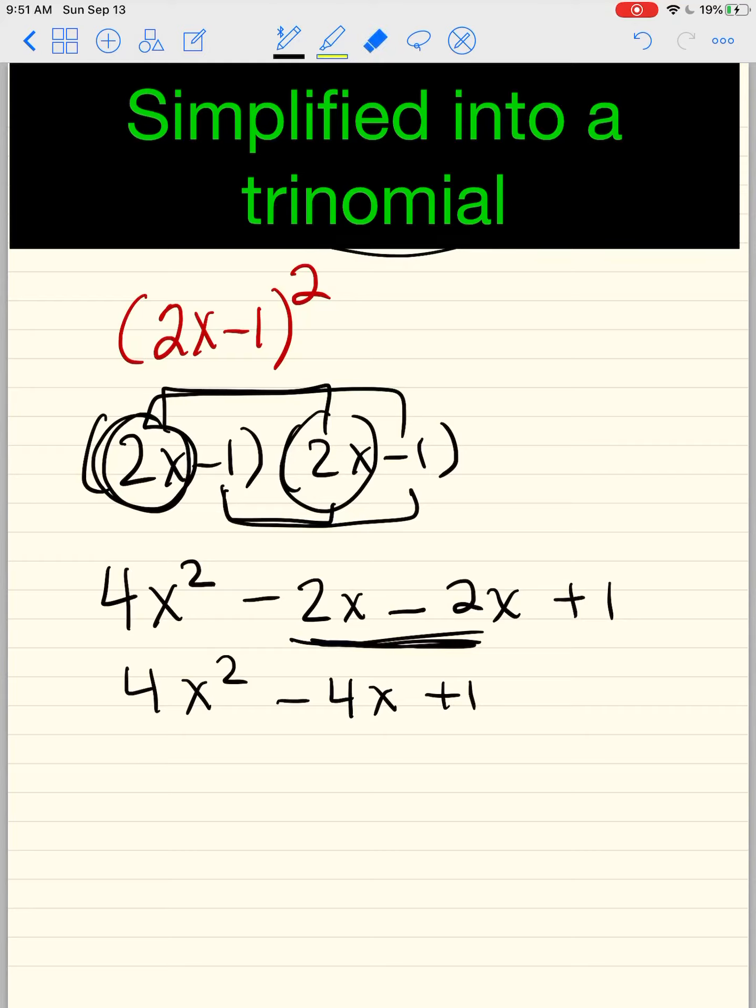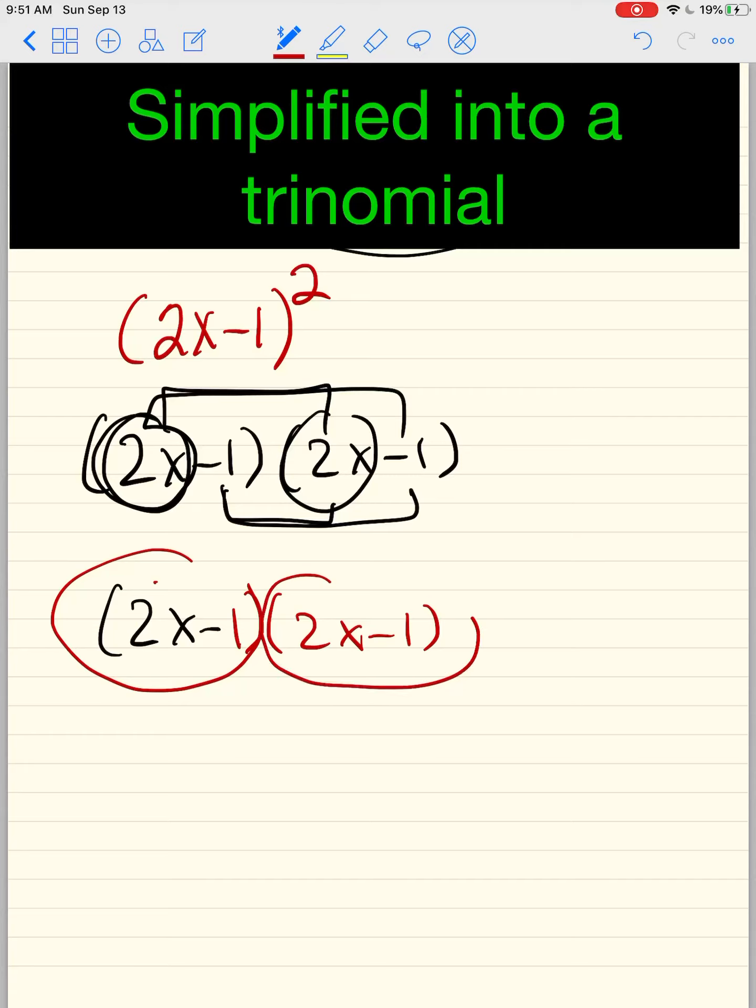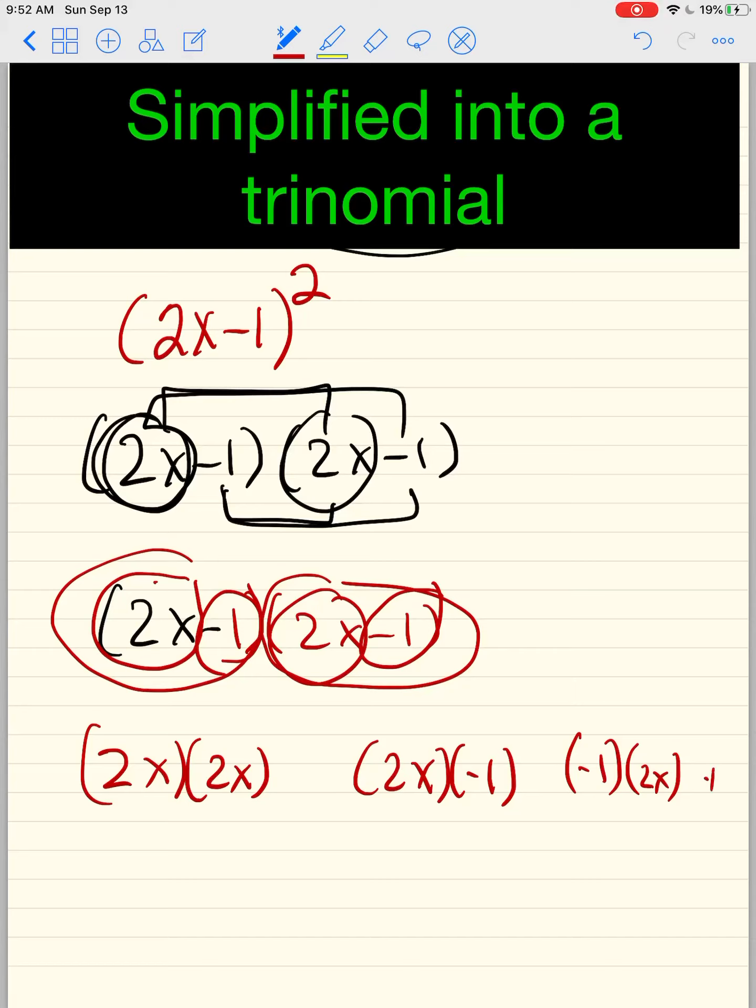I want to just take one second to show you why here things happen the way they did, okay? What we're technically doing is we're taking every person. Let me do a different color now. We're taking every person in this and we're multiplying by every person in this. So you see, it's really 2x times 2x. And then we have 2x times -1. And then you have -1 times 2x. And then you have -1 times -1.